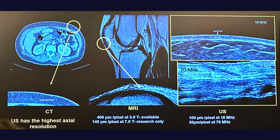At 70 megahertz, ultrasound has a resolution of 30 micrometers per pixel — that's about half the diameter of the average hair follicle. On an MRI scan, it's around 400 micrometers per pixel, meaning the smallest thing it can pick up would be about the size of six hair follicles. So MRI just doesn't have the resolution for us to see hair follicles below the skin.